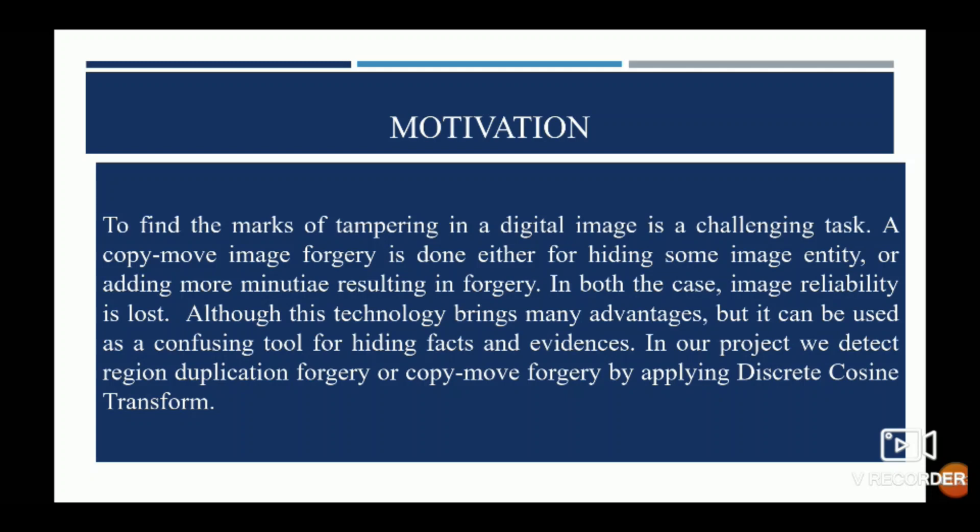Next is the motivation. As tampering of images is becoming increasingly challenging day by day, it is being used for hiding factual evidence. This not only undermines the reliability of an image but also serves as a tool for unlawful activities. Our project helps detect the duplicated region using DCT — Discrete Cosine Transform — followed by CNN, that is Convolutional Neural Network.